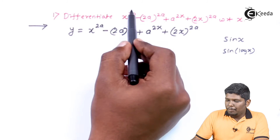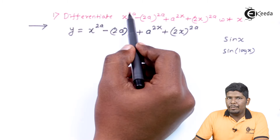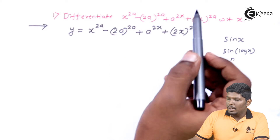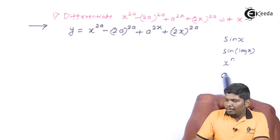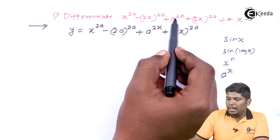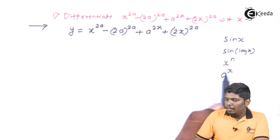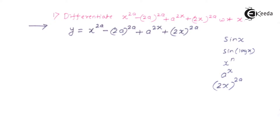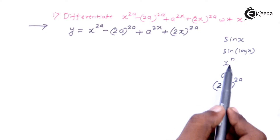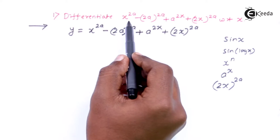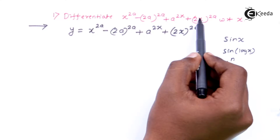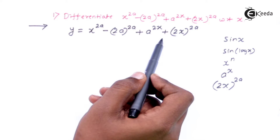In this sum, the first term x raised to 2a is not a composite function — it is a standard function as it can be compared with x raised to n. The second function is a constant function. The third function, a raised to 2x, has standard form a raised to x, but x is replaced by 2x, so it is a composite function. The fourth term, 2x raised to 2a, also has x replaced by 2x, so it too is a composite function.